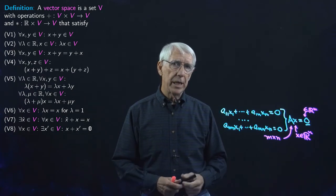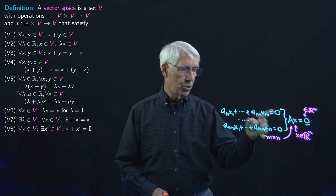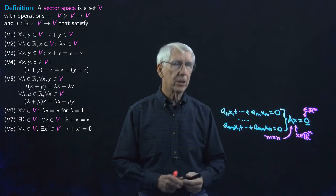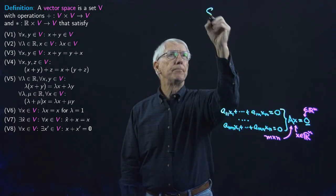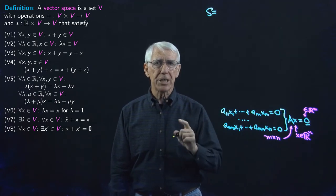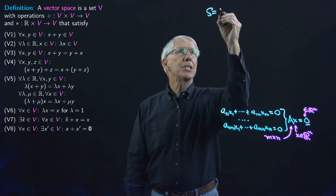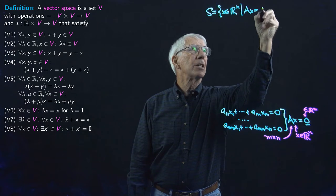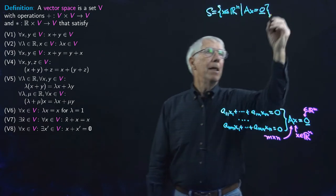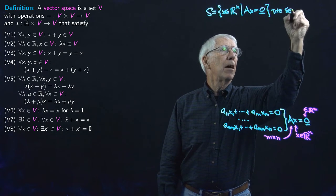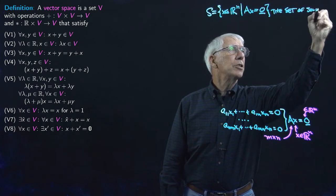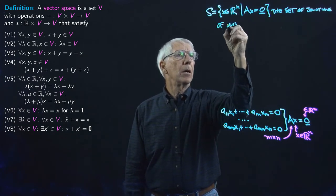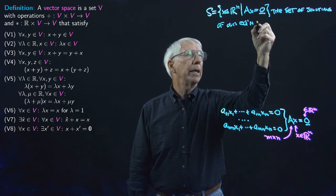This is our general homogeneous system of linear equations written more succinctly. What we're going to be interested in is the set of solutions to this matrix-vector equation. I'll call that set S — for set or solutions. S is the set of vectors in Rn such that AX equals the zero vector, and that is the set of solutions of our equation system.